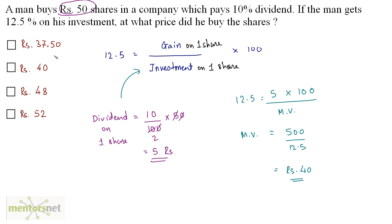So the price at which the man bought the shares is 40 rupees. And that is option B.